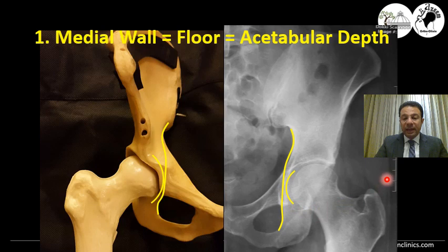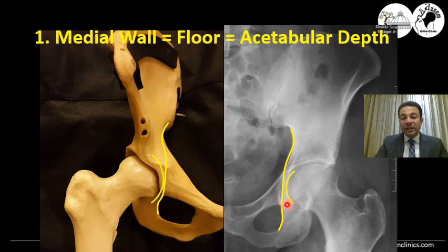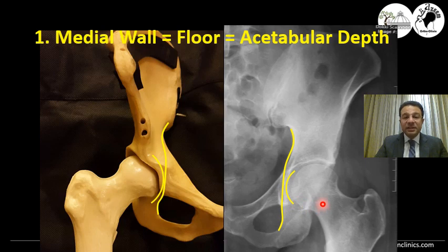This line, anatomically, should be slightly lateral to what we name the posterior column line or the ilio-ischial line. So it should not be touching it or medially protruding over it. That's the medial wall line, and it delineates or shows how much depth the acetabulum has.